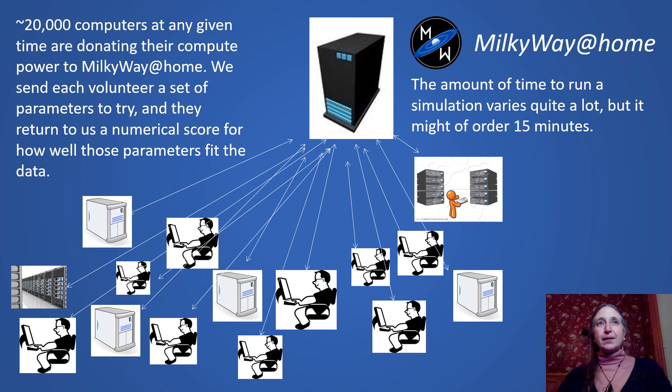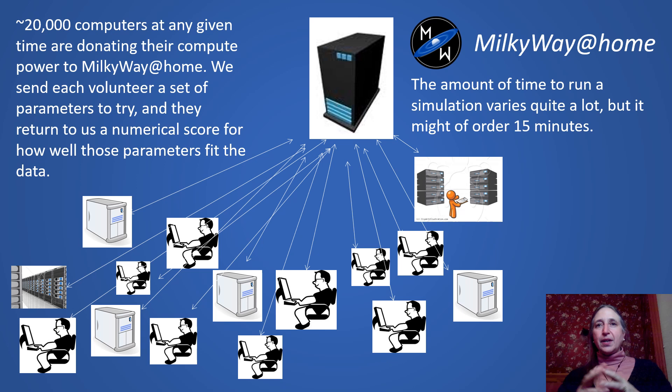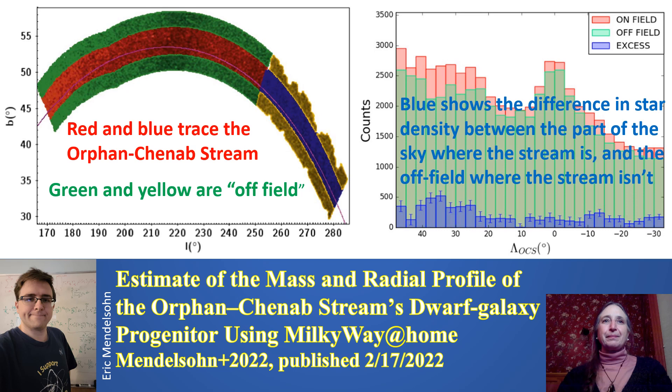Doing that many simulations takes a lot of computing power. Luckily, we have about 20,000 people at any given time all over the world who are donating their computer cycles — the ones they're not using — to our computations. That is what Milky Way at Home is. We have a server at Rensselaer Polytechnic Institute, and we send out over the internet a work unit, which specifies a bunch of parameters to try. People all over the world crunch through the numbers and tell us how good a fit it is to the data, and we keep sending out more work units until we get a really good fit.